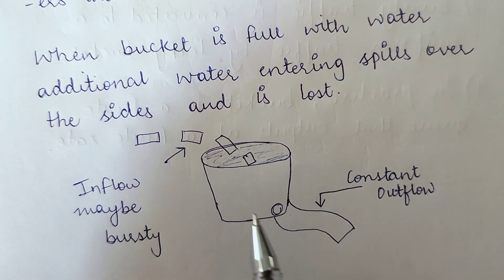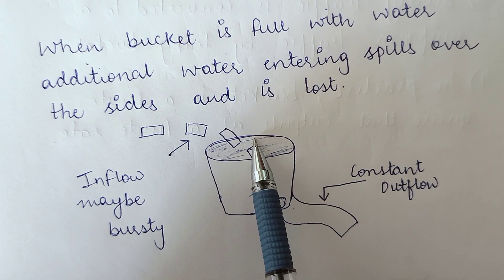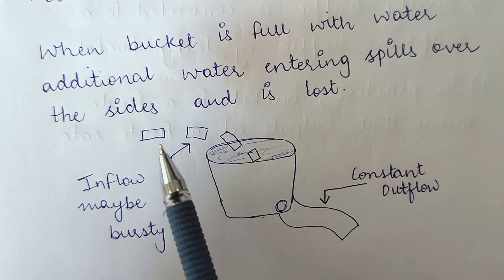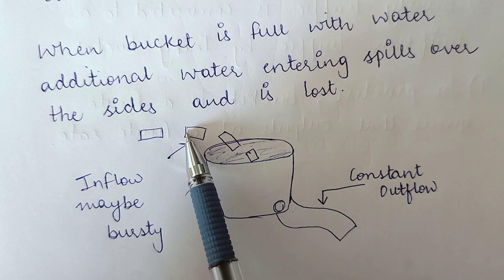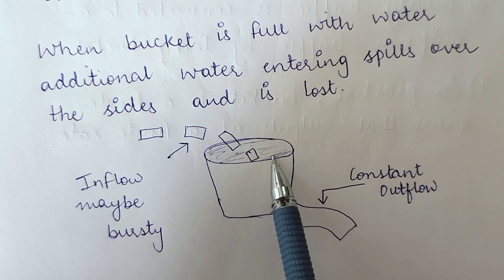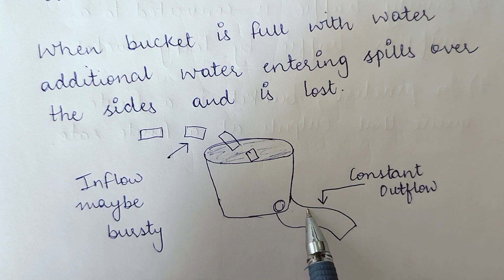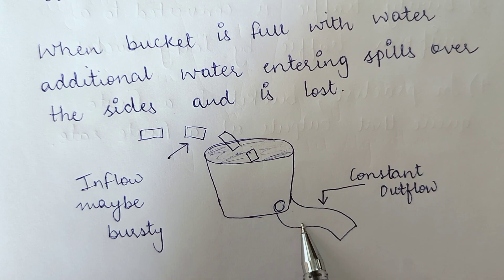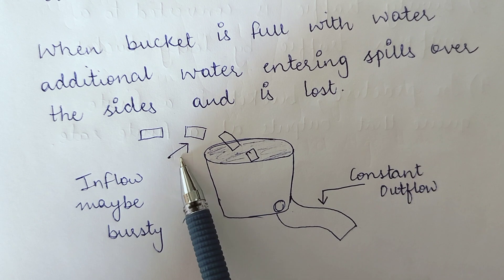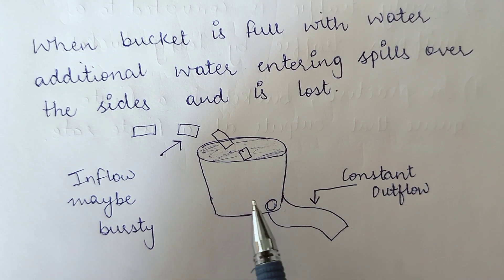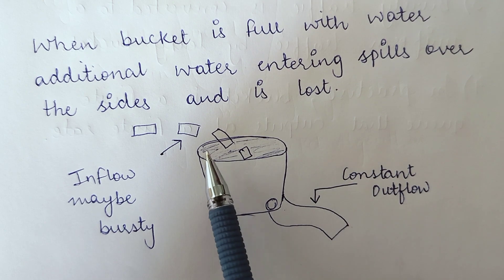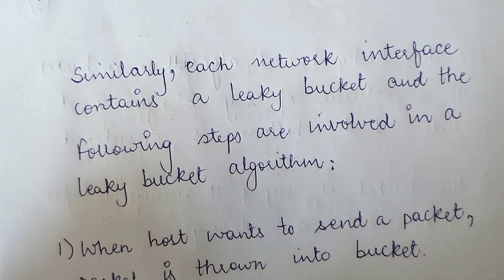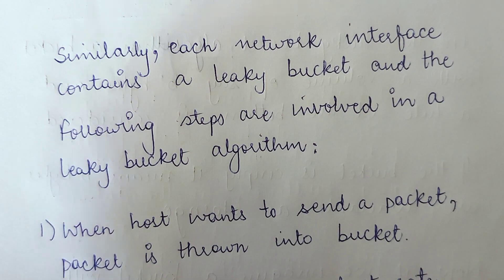Here you can see the visual representation: these are the data packets, this is the subnet, and this is the rate at which data packets flow out of the subnet. The leaky bucket is represented as a bucket with a hole at the bottom. No matter at what rate water enters the bucket, the outflow is constant. When inflow is bursty and the bucket is already full, some water spills out of the edges — that is the concept of the leaky bucket algorithm.